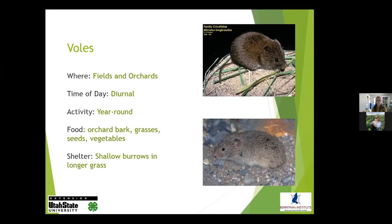Voles are commonly found in fields but have figured out how to live successfully in orchards. They are diurnal, so you'll see them running around during the day, and they are active year-round. A lot of damage happens in wintertime when they're running around under the snow and people don't realize they have the damage until spring. In native environments they eat grasses and seeds, and expand that to eat vegetables, tubers, bulbs, and orchard bark in urban and suburban environments. Natively they have shallow burrow systems in long grass, and one vole may have three or four hole openings with an extensive burrow system connecting them.